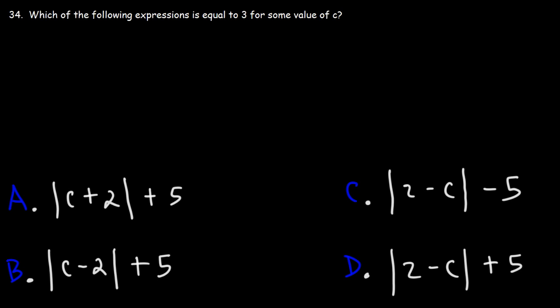It's important to understand that the absolute value of an expression cannot be negative. So the lowest it can be is 0. 0 or something more plus 5 will never equal 3.